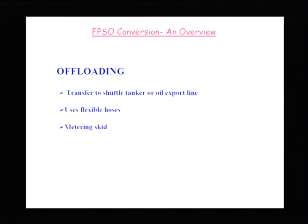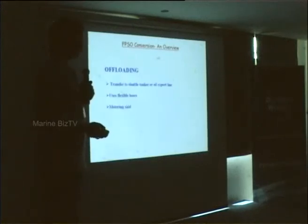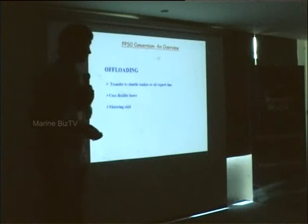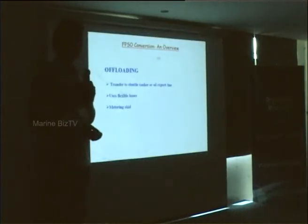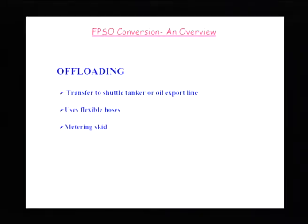The offloading system is used to offload stabilized — preliminarily purified — oil to the shuttle tankers. This is done using flexible offloading hoses and a flow metering skid, which is required from a commercial point of view to know how much oil is sold.